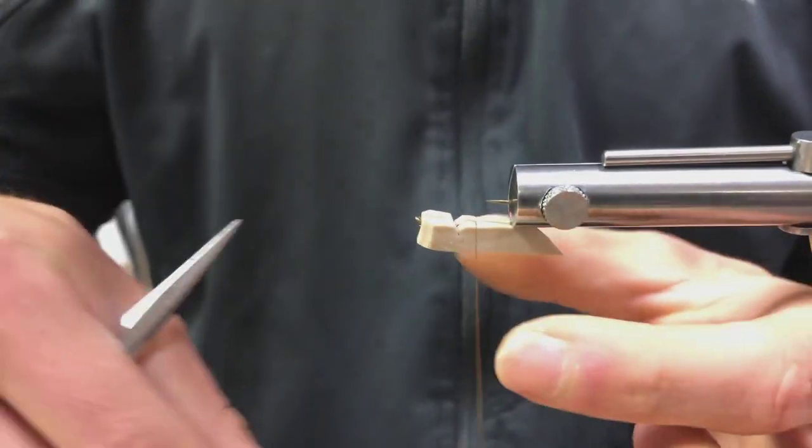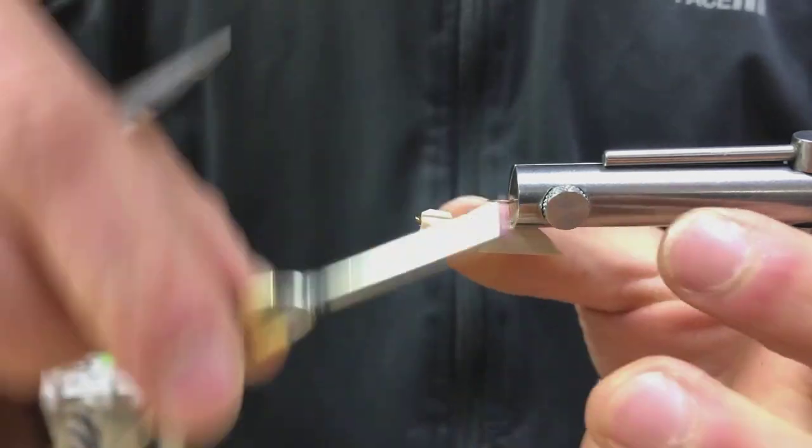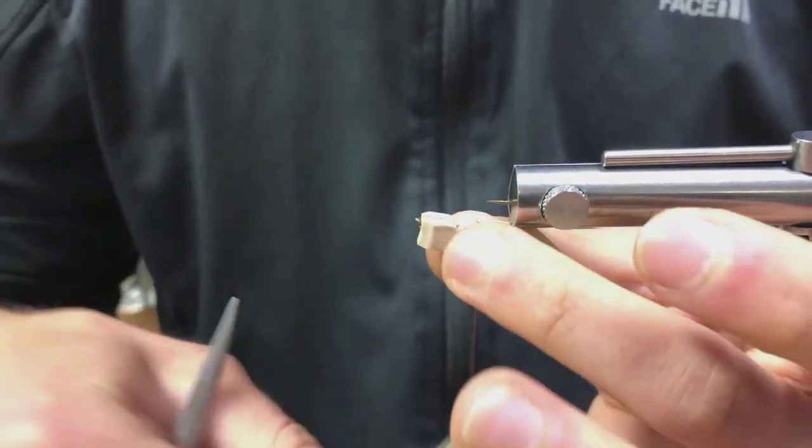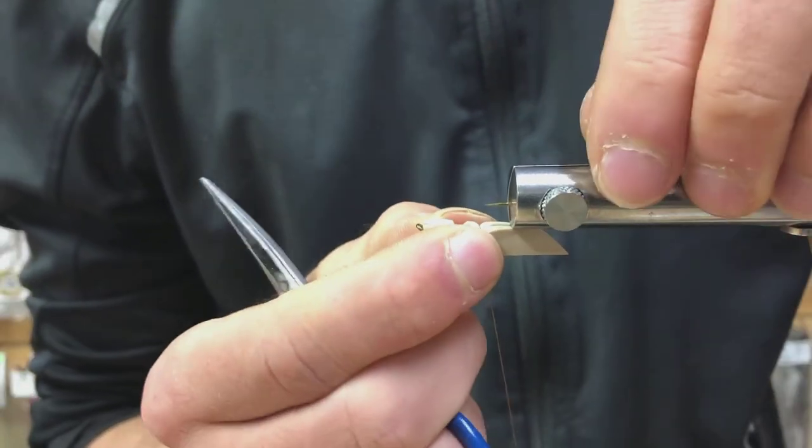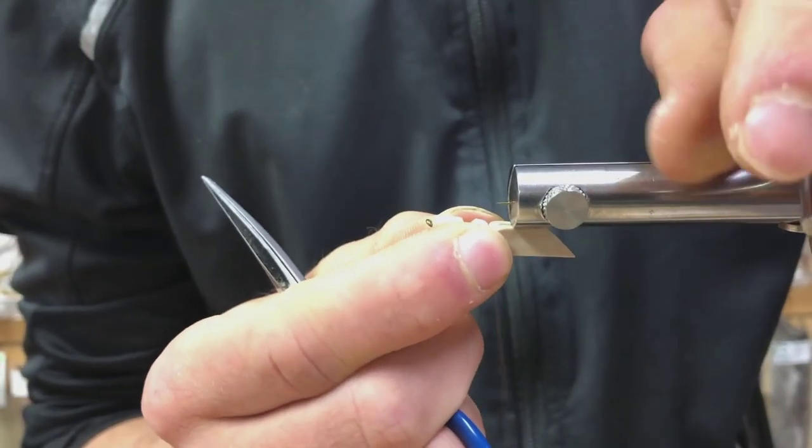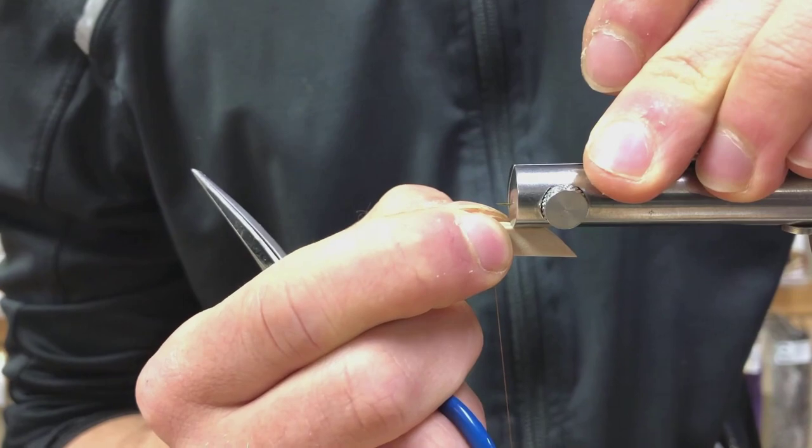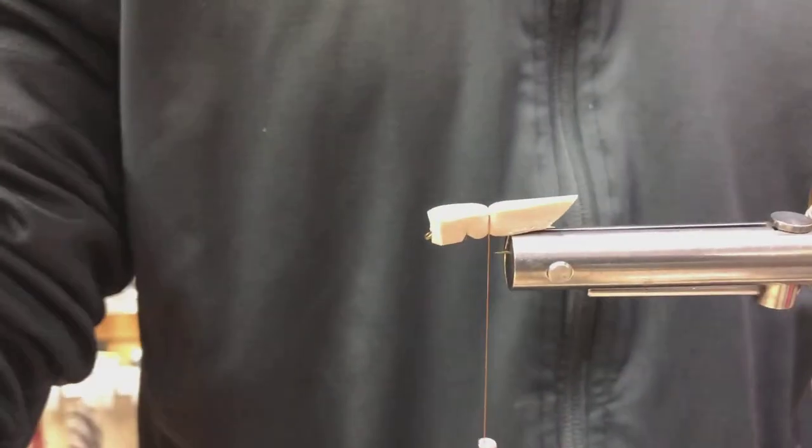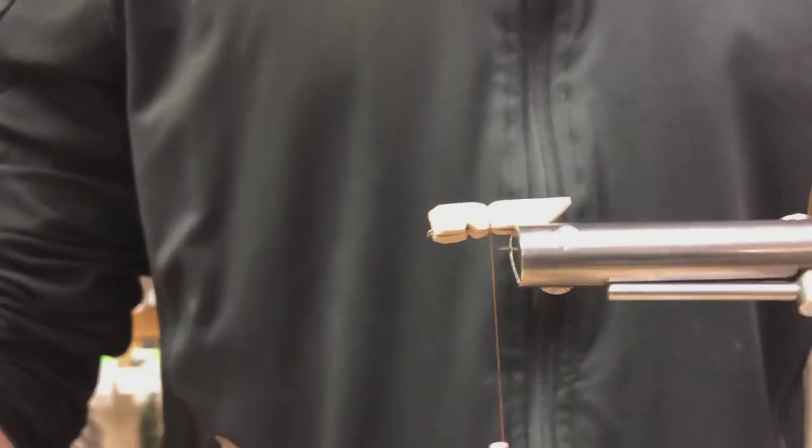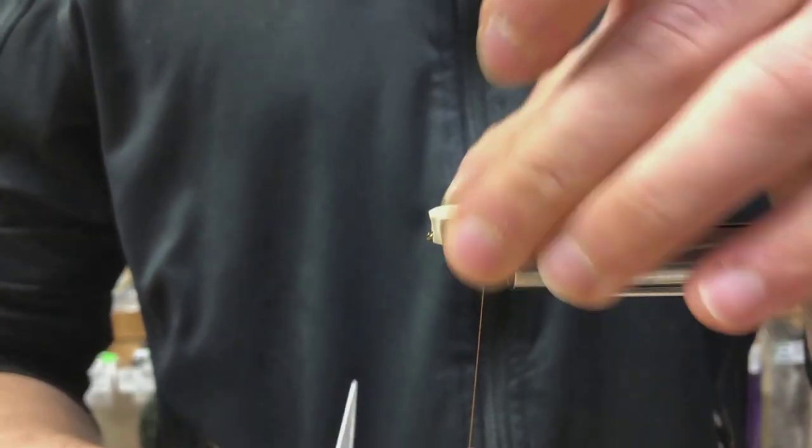And then take your thread. And you want to create one segment about where you want the thorax to be. Just press down on the sides of that body there to get it fully secured. So, now the body is fully glued on.